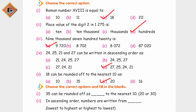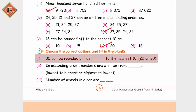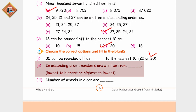Now choose the correct option and fill in the blanks: 35 can be rounded off to the nearest 10. Ab nearest 10 par jab 35 round off hoga to wo 30 par hoga. Next: in ascending order, numbers are written from - yeh wali option 'lowest to highest numbers' hai.